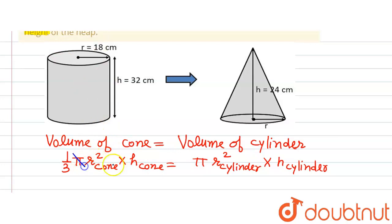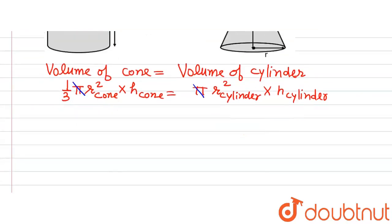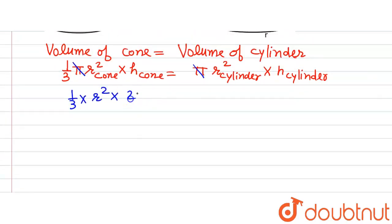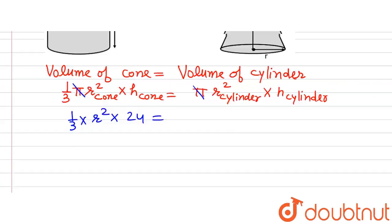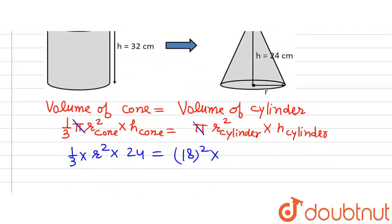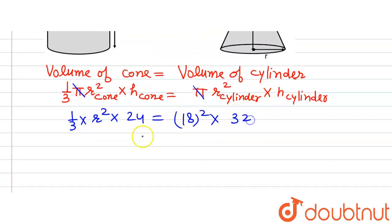The π cancels from both sides, giving us (1/3) × r² × 24 = 18² × 32. Dividing 24 by 3 gives 8, so we have 8r² = 18² × 32.